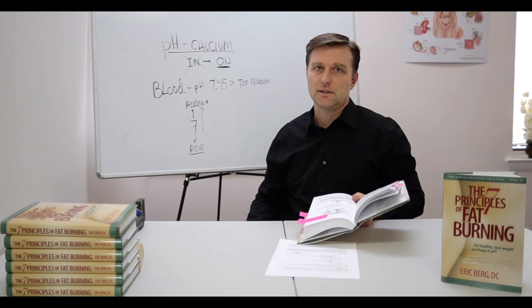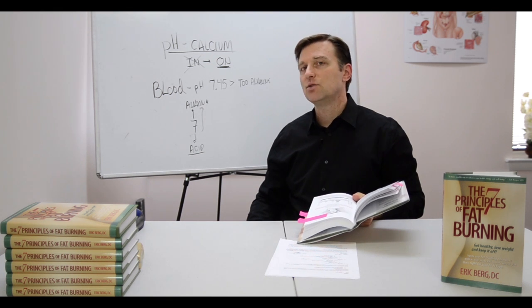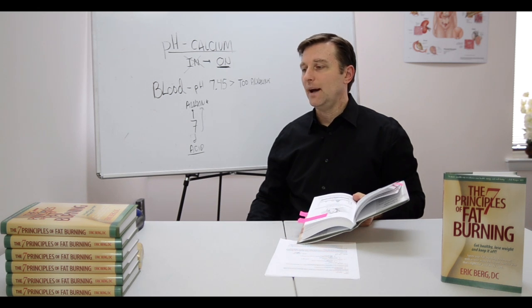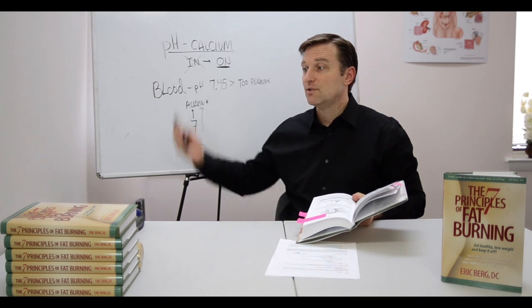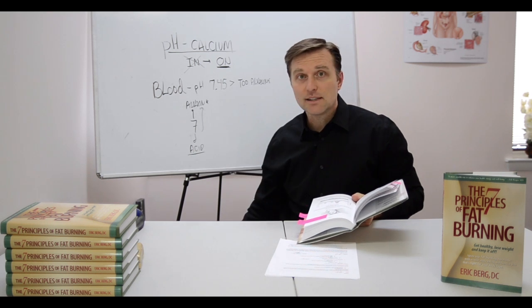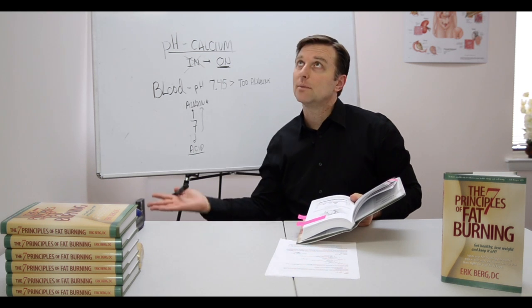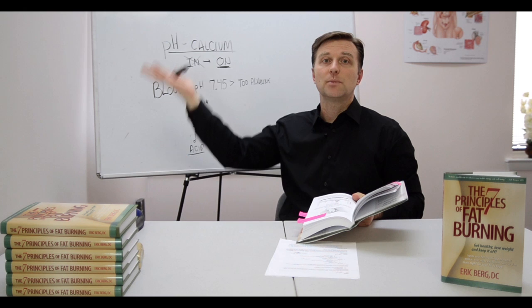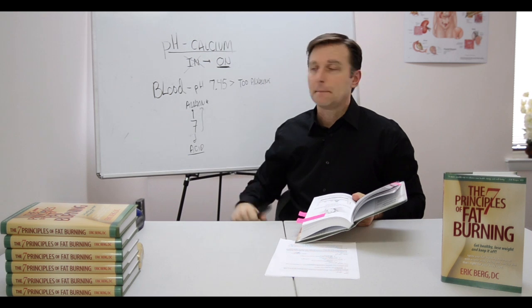If the pH of that blood goes too high, you're going to develop something called alkalosis. What is alkalosis? That just means that your blood's too alkaline. That is a condition that happens with adrenal gland problems and stress. But when you measure the urine, it's excessively acid — that's because you're dumping all your acids, and on the opposite side, the blood is becoming too alkaline.